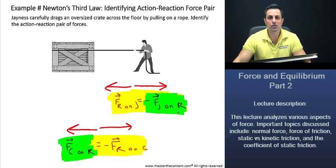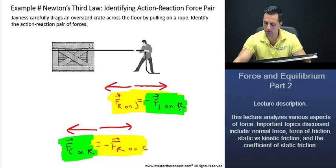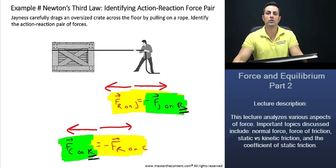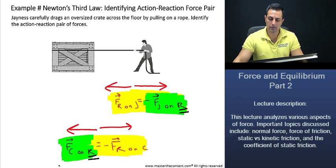We just said that action-reaction force pairs are equal and acting on different objects. Here, the force of Janus is on the rope, and the force of the crate is also on the rope. Because they're not acting on different objects, they're not action-reaction force pairs.